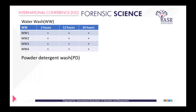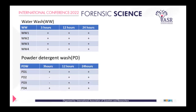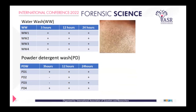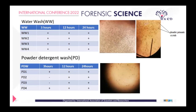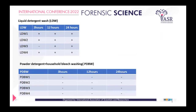Water wash alone showed all positive results, meaning contamination was still present. The powder detergent wash after three hours showed only two negative areas, with the rest remaining positive. The diagrams show the extent of contamination for water wash and powder detergent wash. Liquid detergent also showed some contamination. However, when using the combination of powder detergent plus household bleach, there were no contaminations detected.